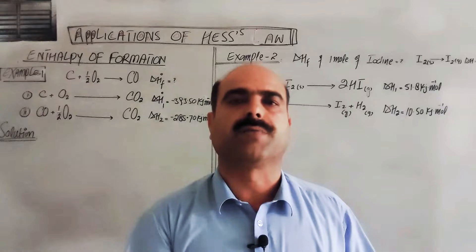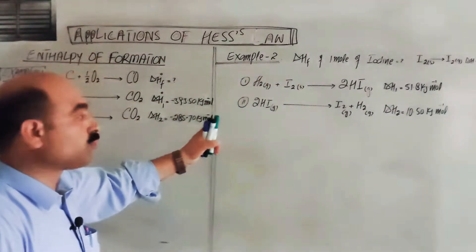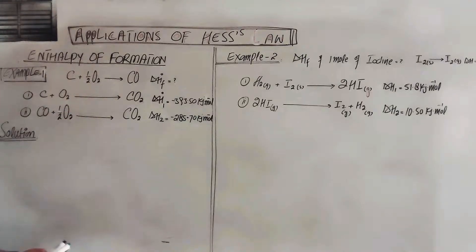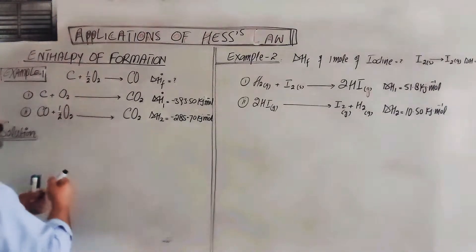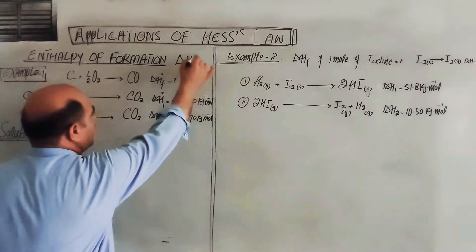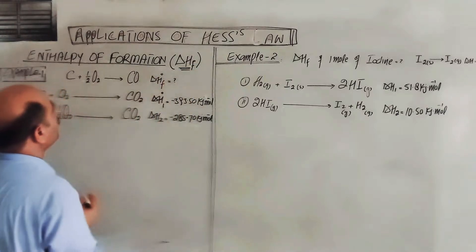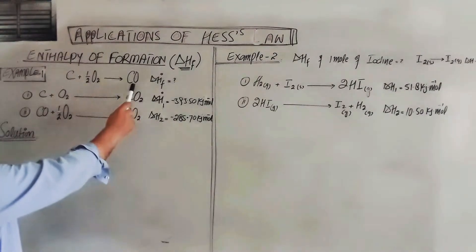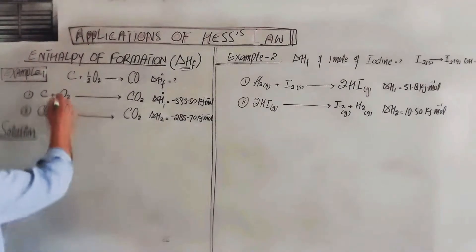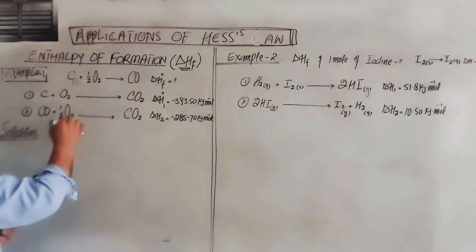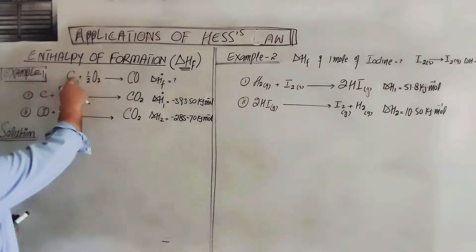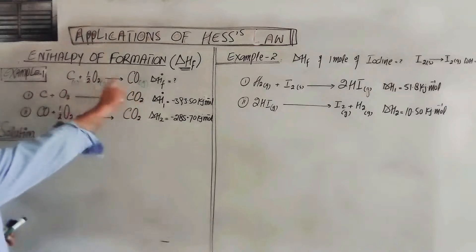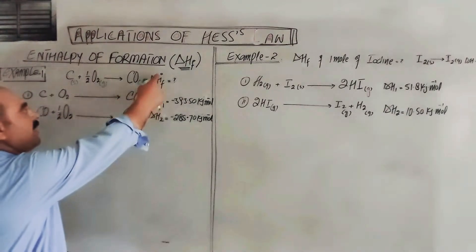Example number one: Let's see how we can determine enthalpy of formation. Enthalpy of formation is represented as delta Hf. Students, in this example we have to find out enthalpy of formation for carbon monoxide. One mole of carbon in solid form combines with half mole oxygen in gaseous state to give carbon monoxide in gaseous state.